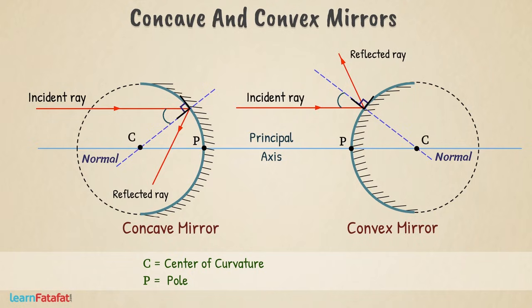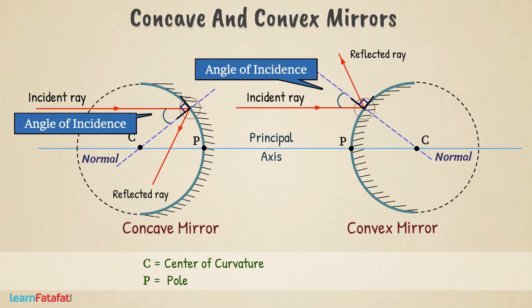The angle between incident ray and the normal at the point of incidence is the angle of incidence. It is often denoted by angle i.